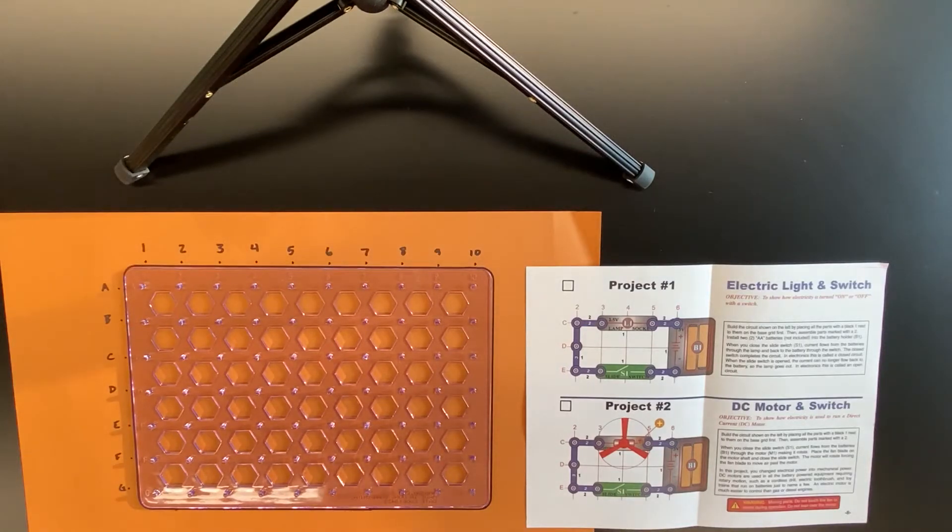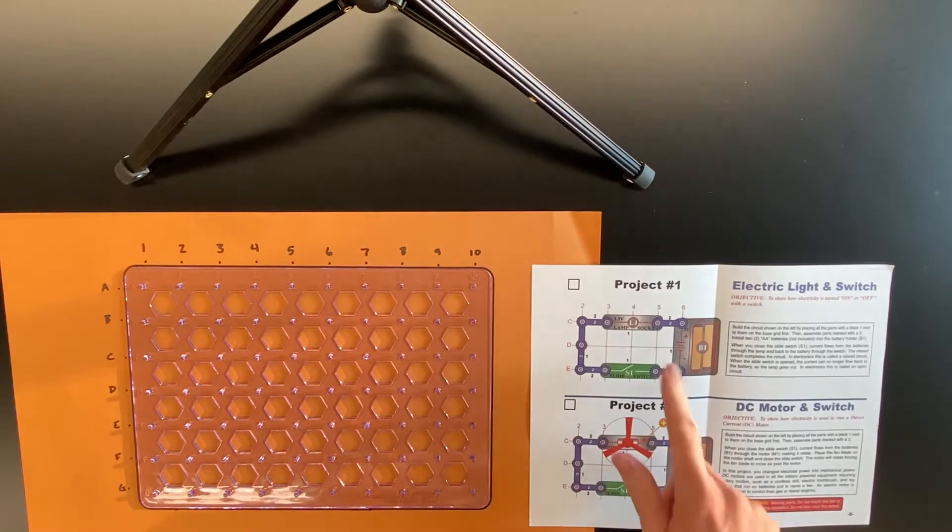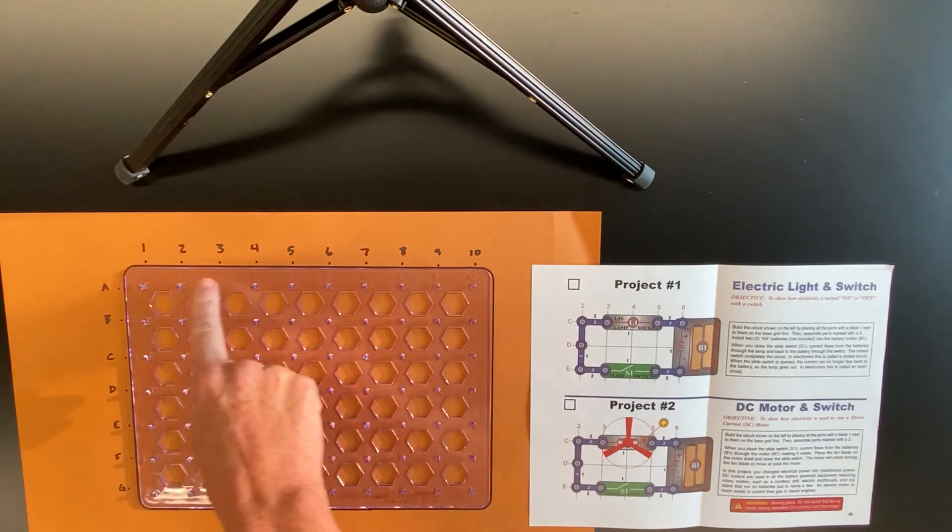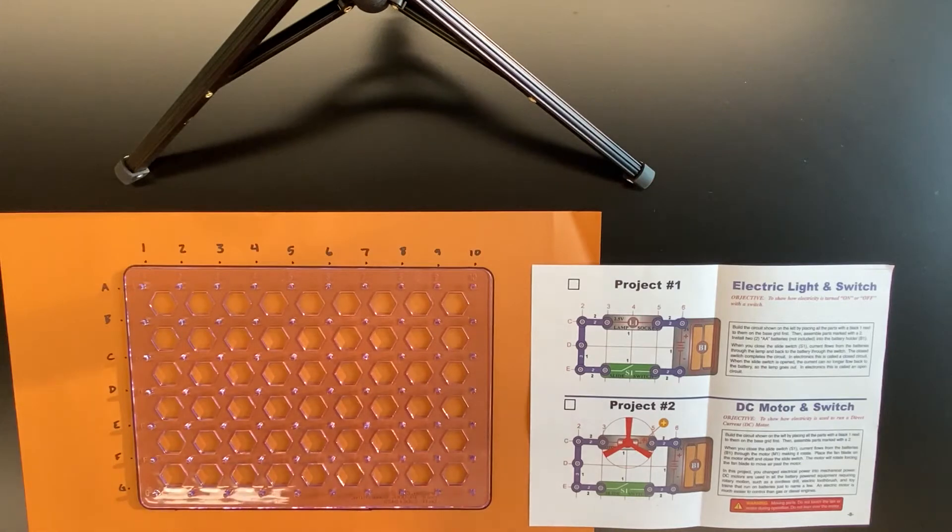I'm going to show you how to put together project number one. If you're looking at your grid, there's numbers 1 through 10 across the top, and then letters A through G going down the side.